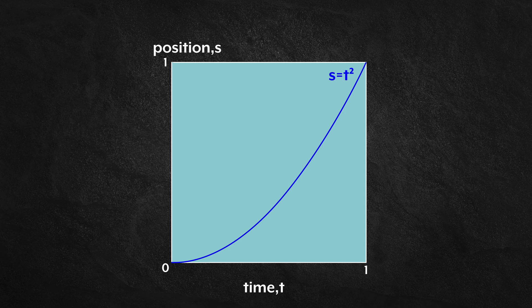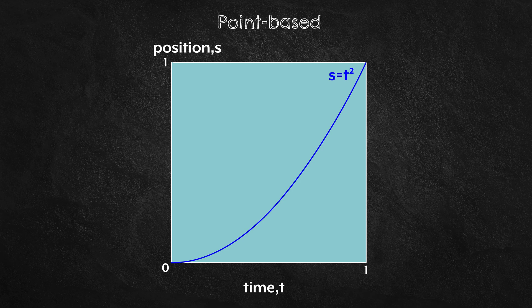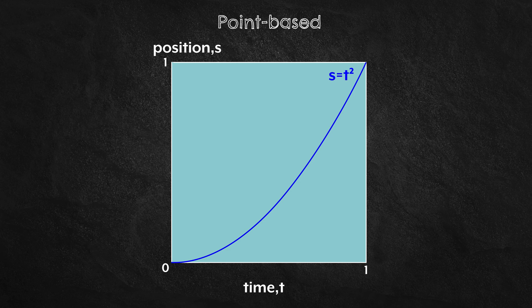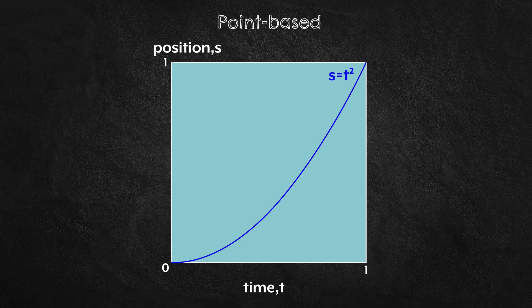This construction, where we build a timeline from individual points in time, is a point-based construction. And it is the construction which Zeno was attacking. How can we march through instants in time if we can't even say when the next instant is? And for any change to occur, an infinite process must be completed.